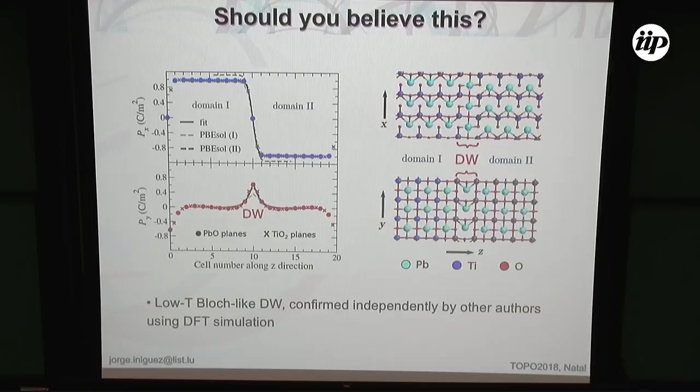These are relaxations in the limit of 0 K. As a function of temperature, this width of the domain wall expands a little bit. If we plot it differently: for the big polarization of the domains, they go from positive to negative — a large value, as typical for lead titanate. At the domain wall, we have a value that is not so small, but confined only to the domain wall.